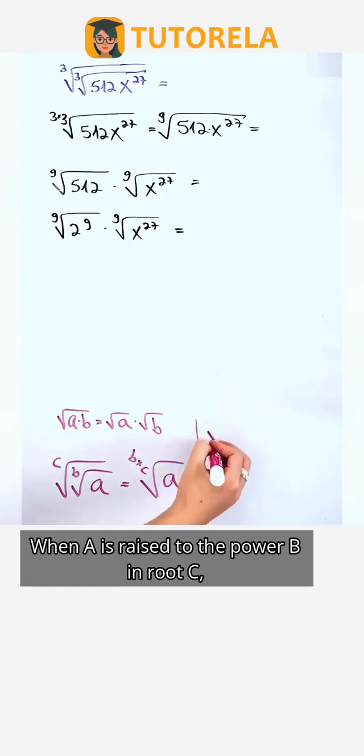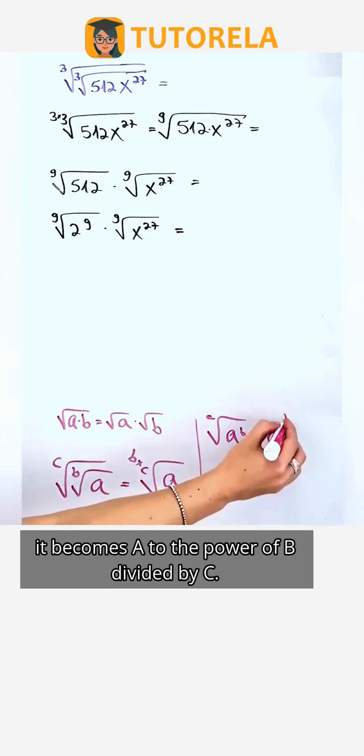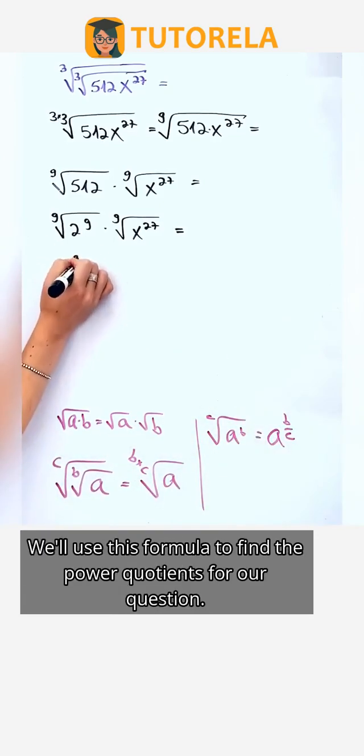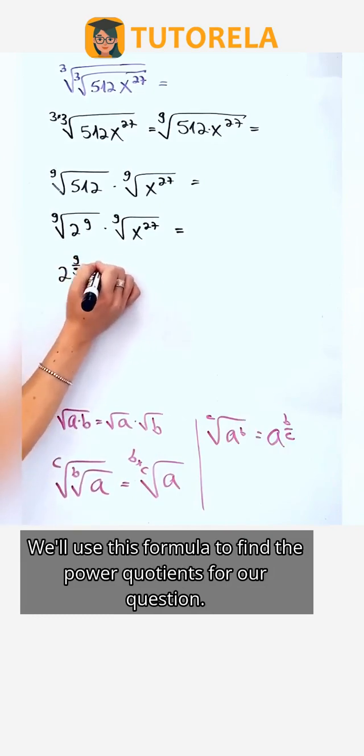When a is raised to the power of b in root c, it becomes a to the power of b divided by c. We'll use this formula to find the power quotients for our question.